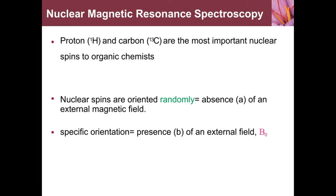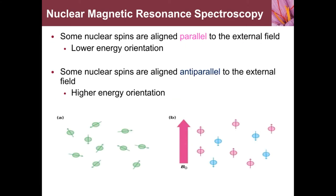Nucleus spins are oriented randomly in the absence of an external magnetic field. In the presence of an external magnetic field B0, some nuclear spins are aligned parallel and some are aligned antiparallel to the external magnetic field, as shown in diagrams A and B. Antiparallel means high energy orientation.